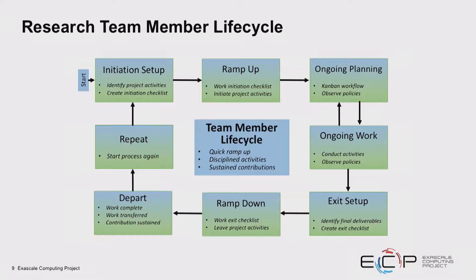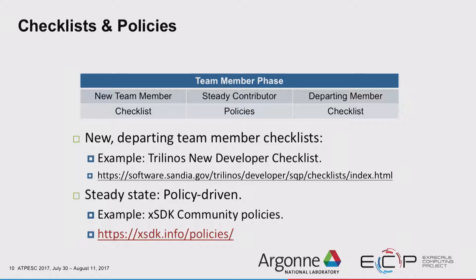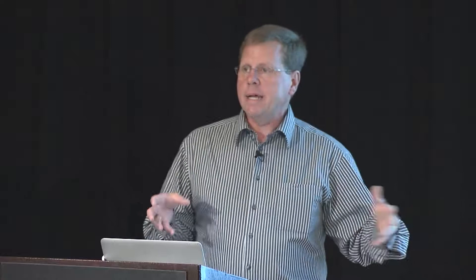I'm going to promote checklists and policies as major elements to making your team work well. You have a new team member checklist, a departing team member checklist, and policies to guide behavior in between. If you want to see examples, we have checklists at our site — including a new developer checklist that we go through with every new postdoc or staff member. For policies, I'd show you an example from the XSDK project — an aggregation effort between Department of Energy library development teams to create a community of scientific library developers — where policies establish the kind of contract and expectations across teams.